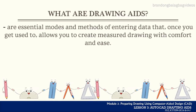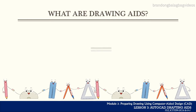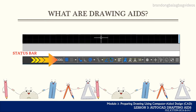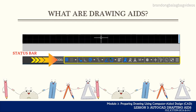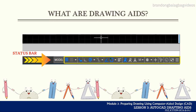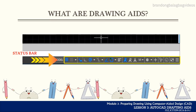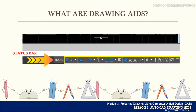Drafting aids can be found on your status bar, and each of these aids can just be toggled on and off to activate. Some additional settings are also accessible by just a right-click on each individual status bar toggle. We will discuss each drawing aid on the following slides.